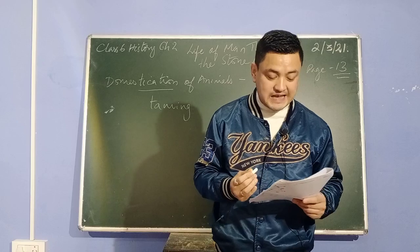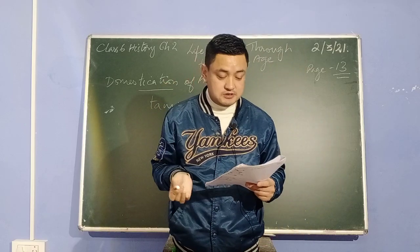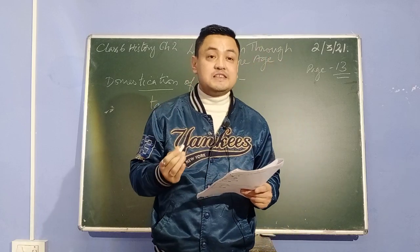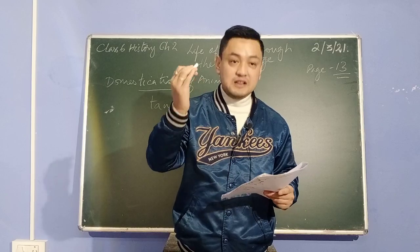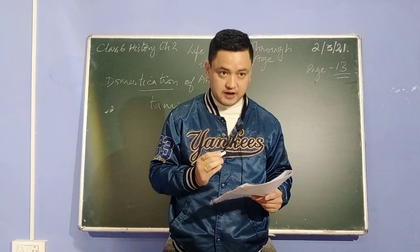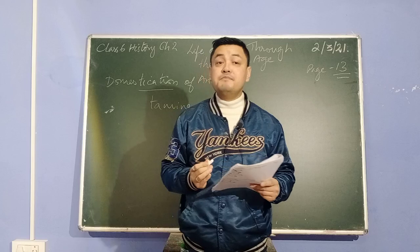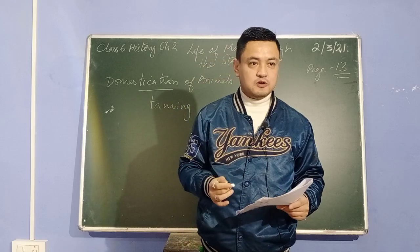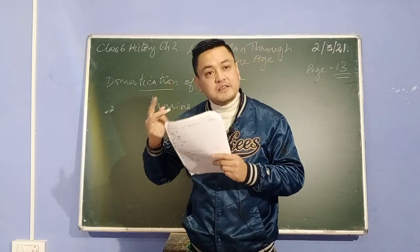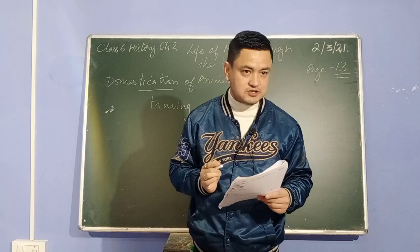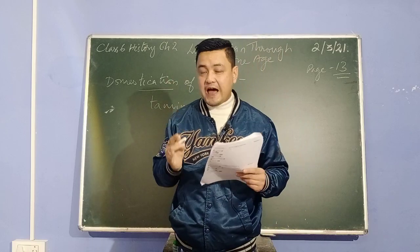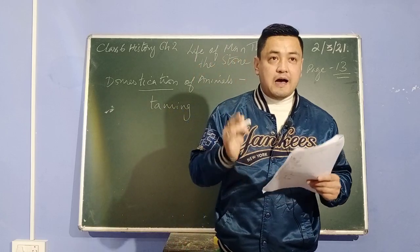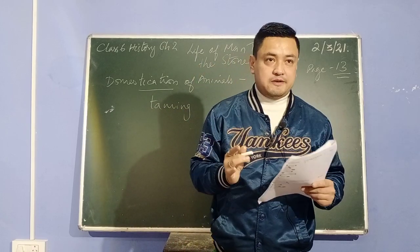These animals helped man in many ways. Domestication of animals gives a regular supply of milk and milk products like ghee, and also gives meat as food. The skin of animals can be used for making clothes and boots. So domestication of animals started in the Neolithic age.